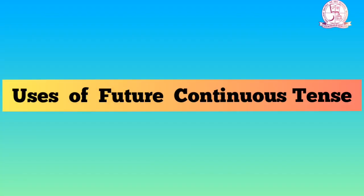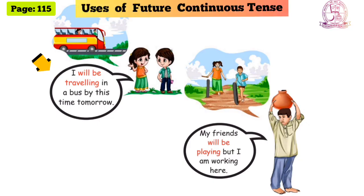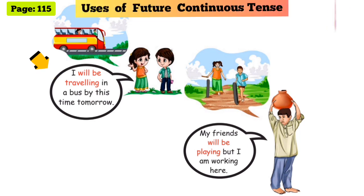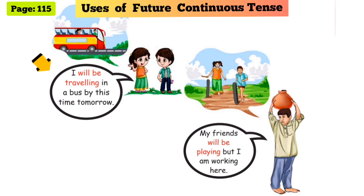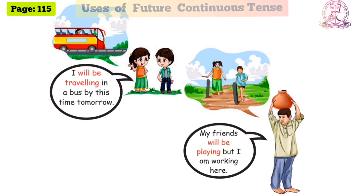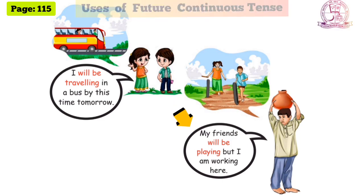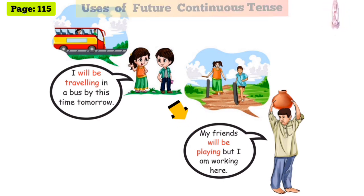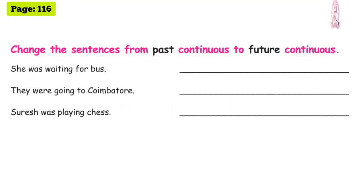Dear students, future continuous tense — in what situation do we use it? For example: 'I will be traveling in a bus by this time tomorrow.' That means, tomorrow at a specific time, the action will be continuously happening. Another example: 'My friends will be playing.' Future continuous tense — auxiliary verb: will be, present participle.